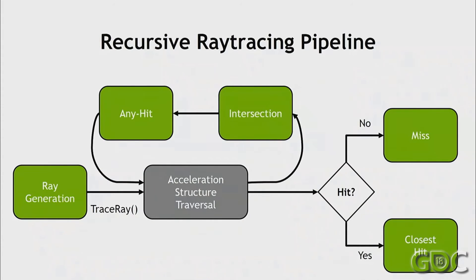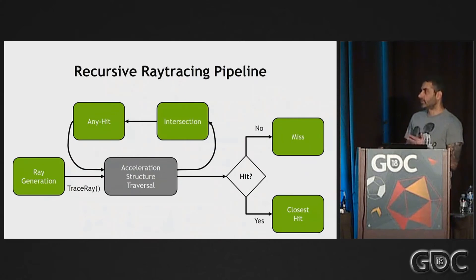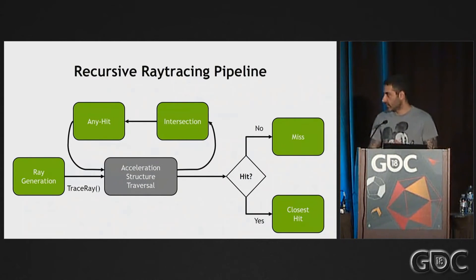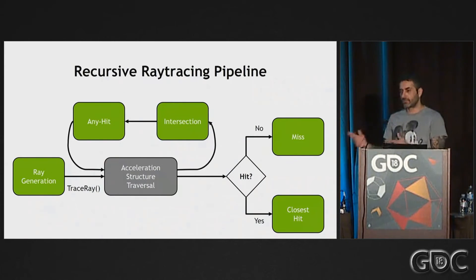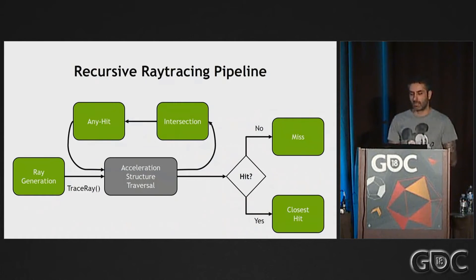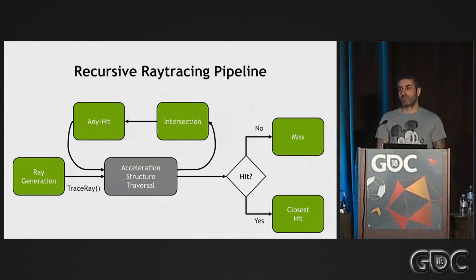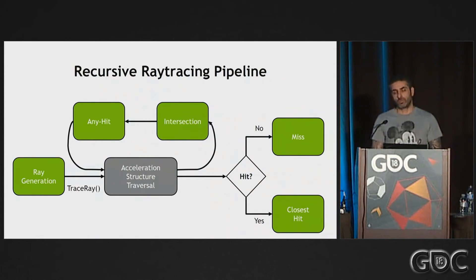It's going to start with the ray generation shader. Then we're going to do the traversal, intersection test, and at the end if there was a hit, the closest hit shader is going to get called, and if not, we're going to get a miss shader. Literally, that's the only thing you need to know about how DXR works.